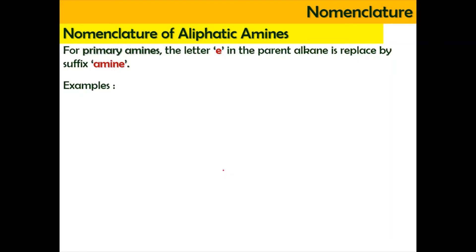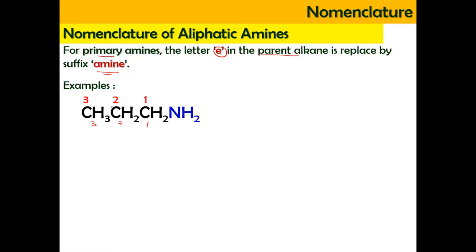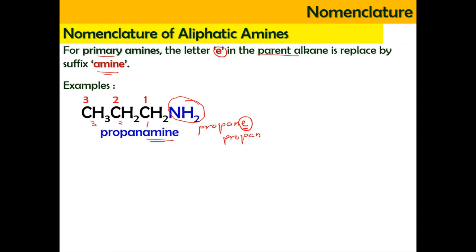For the structure of a primary amine, the letter 'e' in the parent alkane name is replaced by the suffix 'amine.' So if you have three carbons, the alkane name is propane; when attached with an amine group, it becomes propanamine. The 'e' is changed to 'amine' — so propan-e becomes propanamine.